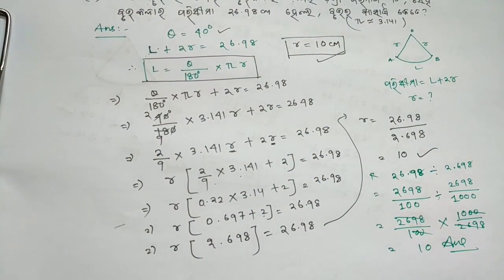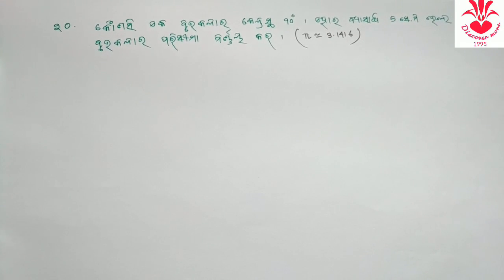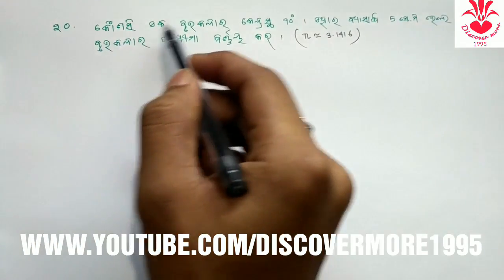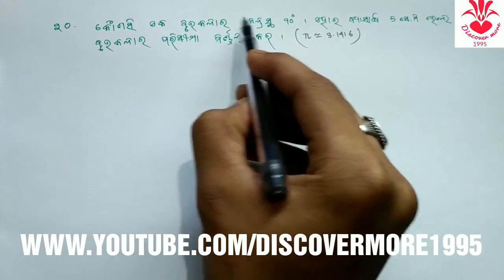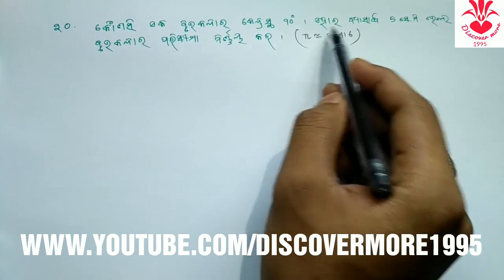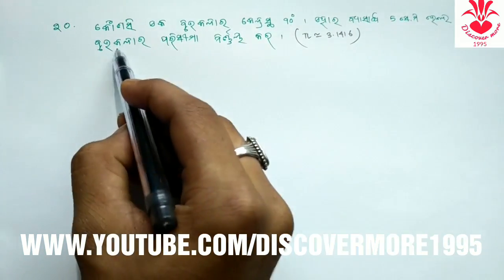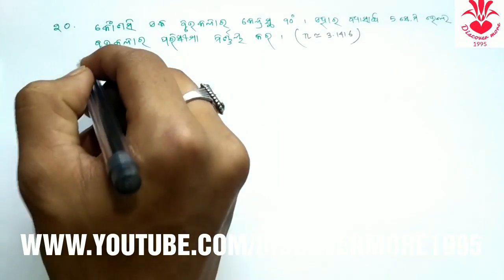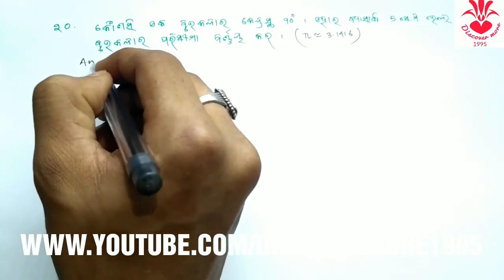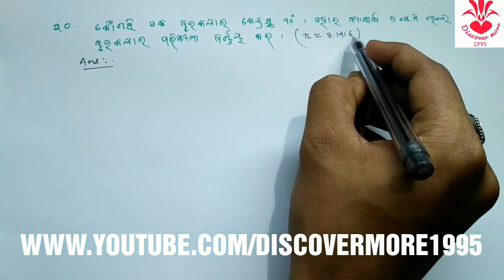Now Question number 20. Writing question number 20: A circular arc has a central angle of 90 degrees and its diameter is 500 centimeters. Find the perimeter of the arc.